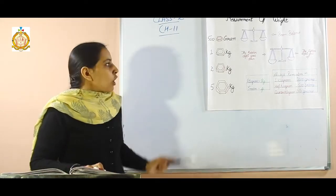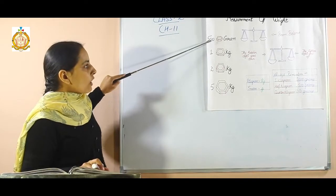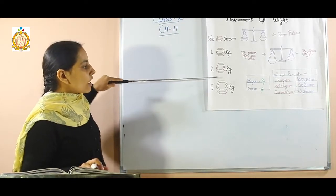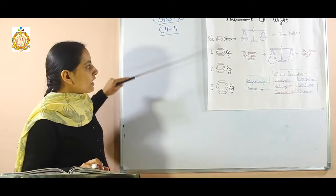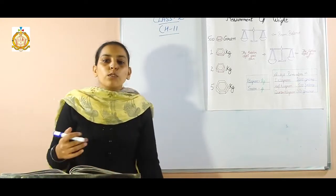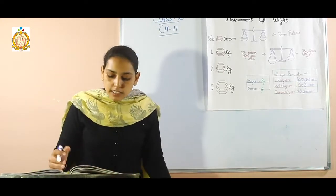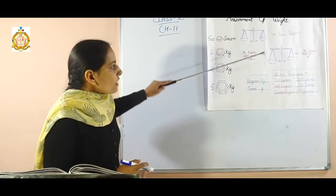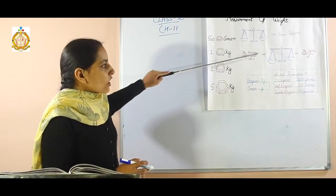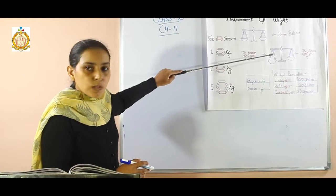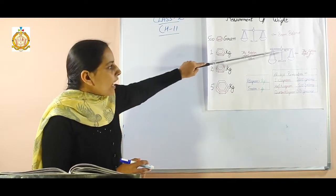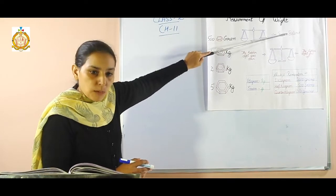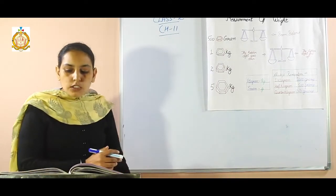Students, some commonly used weights are 500 gram, 1 kg, 2 kg, and 5 kg. These are the higher weights that we can use to measure things. The heavier side of an object goes towards the downward direction and the lighter side of the object goes towards the upward direction.